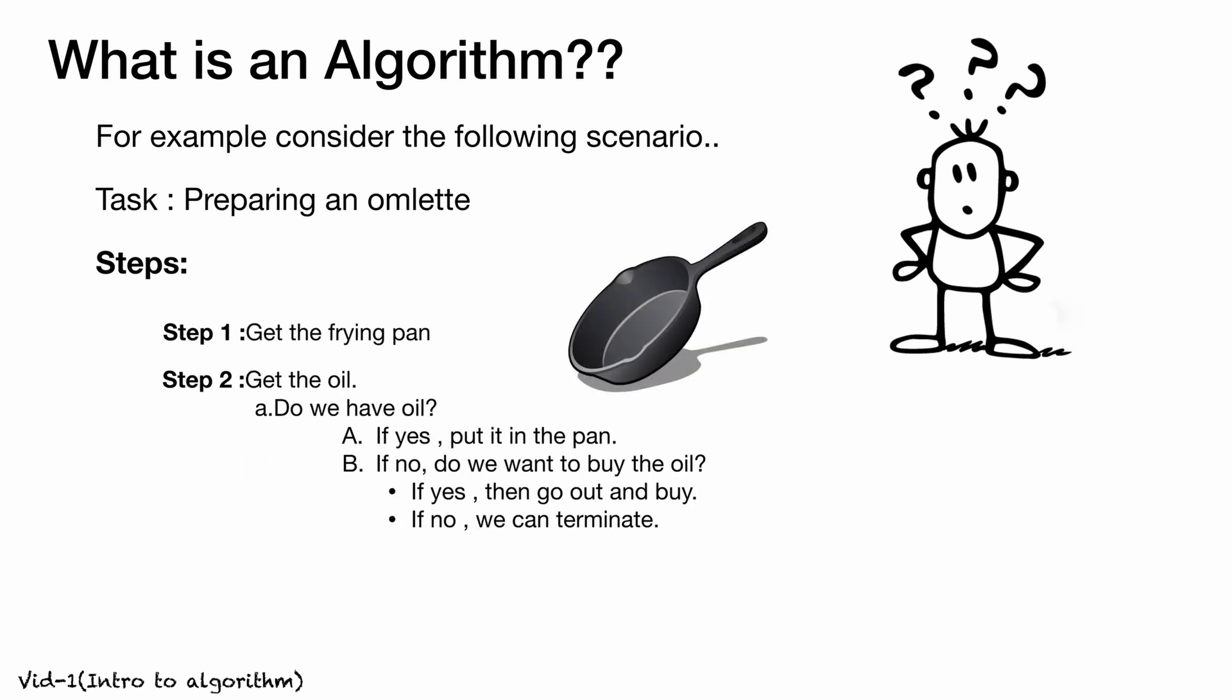For getting the oil, we check whether we have oil or not. If we have oil, we put it in the pan. If we don't have oil, we decide whether to buy oil. If yes, we go and buy the oil. If no, we can terminate the process. All these things come under step 2.